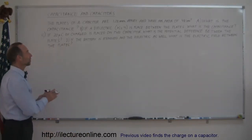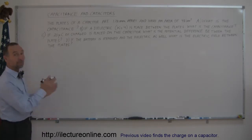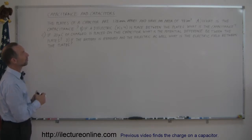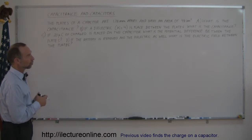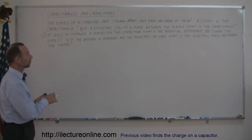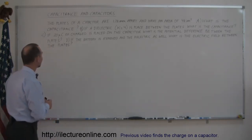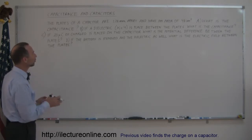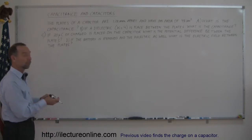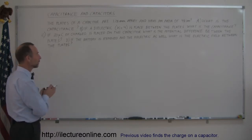Welcome to iLectra Online. Here's another example of how to work with capacitors and capacitance. We have a long problem, so let's read it together. The plates of a capacitor are 1.28 millimeters apart and have an area of 48 centimeters squared. Part A: What is the capacitance? Part B: If a dielectric with K equals 4 is placed between the plates, what is the capacitance? If 20 microcoulombs of charge is placed on the capacitor, what is the potential difference between the plates? And if we remove the battery and the dielectric, what is the electric field between the plates?